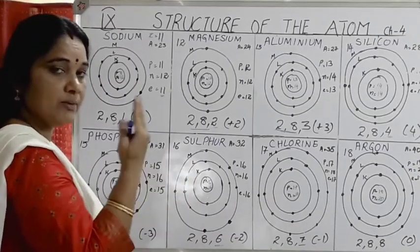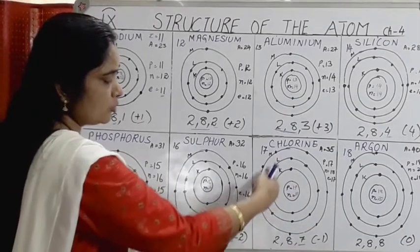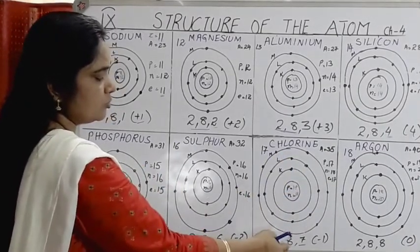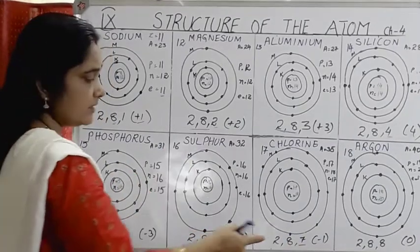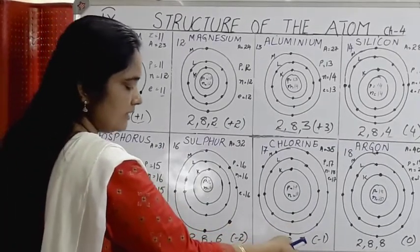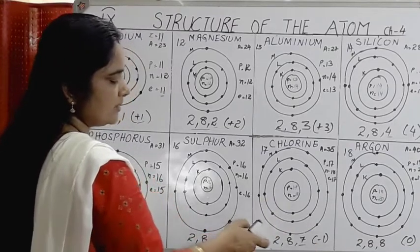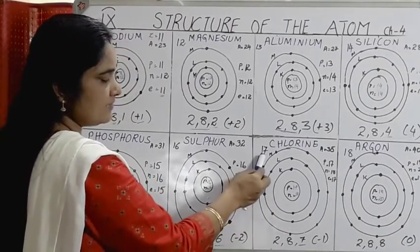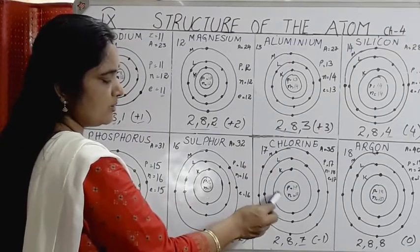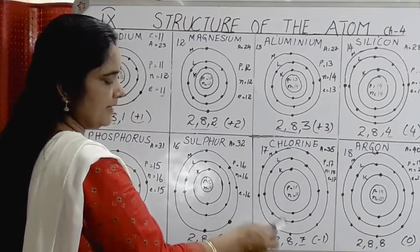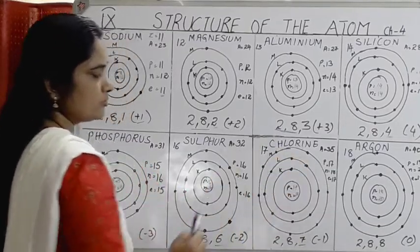For chlorine (configuration 2, 8, 7): 8 − 7 = 1, valency = −1. Chlorine can gain 1 electron to complete the octet. All of you should count properly and fill the shells. Draw 3 shells (K, L, M) for sodium through argon: K gets 2 electrons, L gets 8, and the remaining go into M.